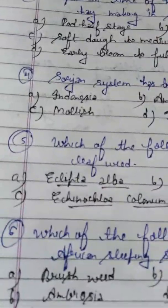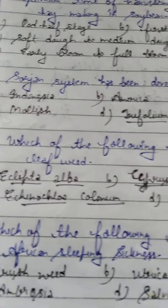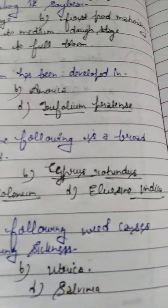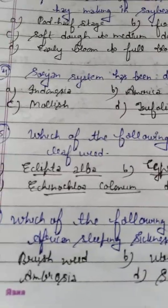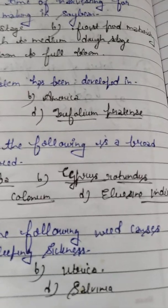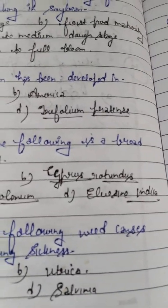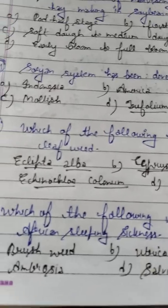Student, question number 5 — this is quite easy. Which of the following is a broad leaf weed? Option A: Eclipta alba. Option B: Cyperus rotundus. Option C: Echinochloa colonum. Option D: Eleusine indica.